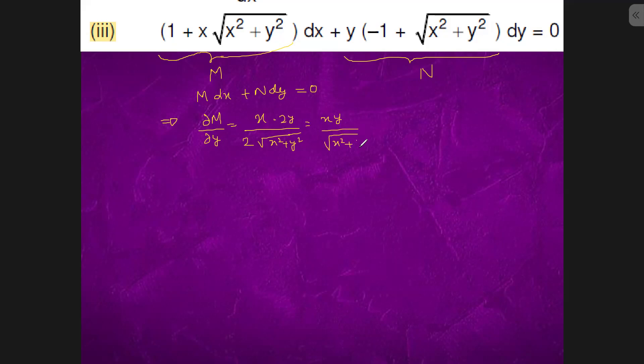Now dn/dx: this is y, it will become zero. This is x by root under x square plus y square. Now this equals to dm/dy. When you have such situation, this equals to dn/dx, and this is the exact case.